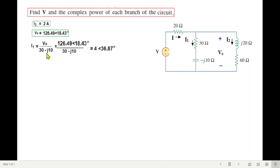Now we find I1. The total current I is I1 plus I2. This gives the total current.